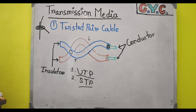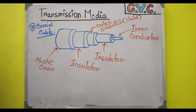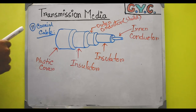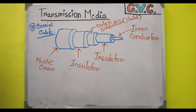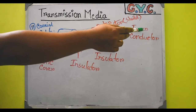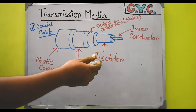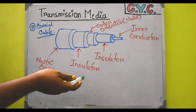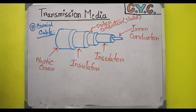Next we will go with the coaxial cable. If you carefully look at the coaxial cable I have drawn on the board, you will find that it is essentially an updated version of twisted pair cable. In twisted pair cable we had a conductor with insulation and a plastic cover. But in coaxial cable we have an inner conductor, the inner conductor is covered with an insulator, and the insulator is covered with an outer conductor or shield.